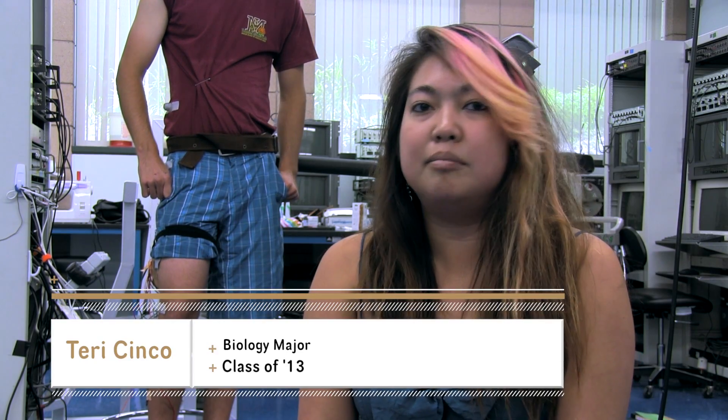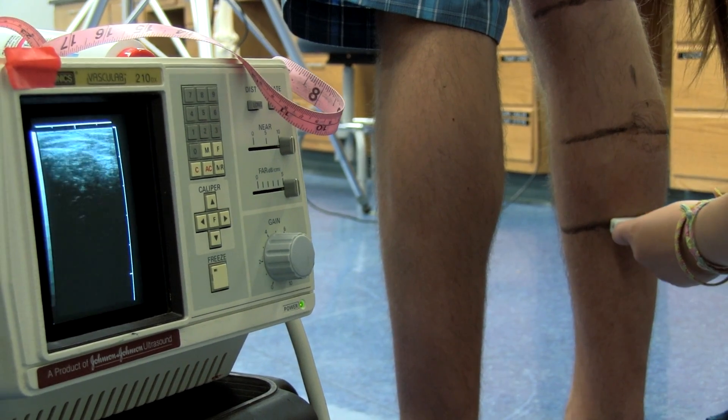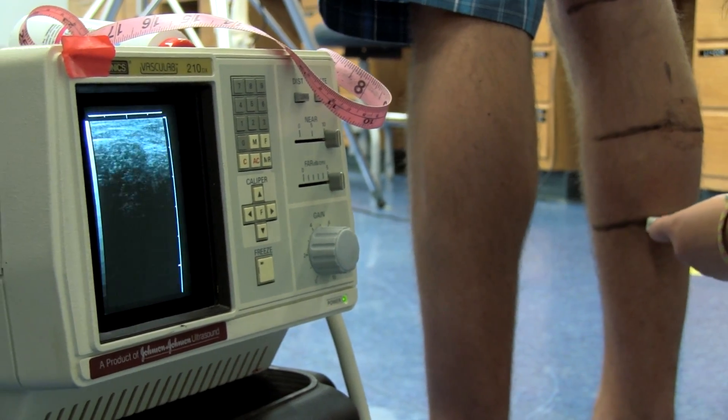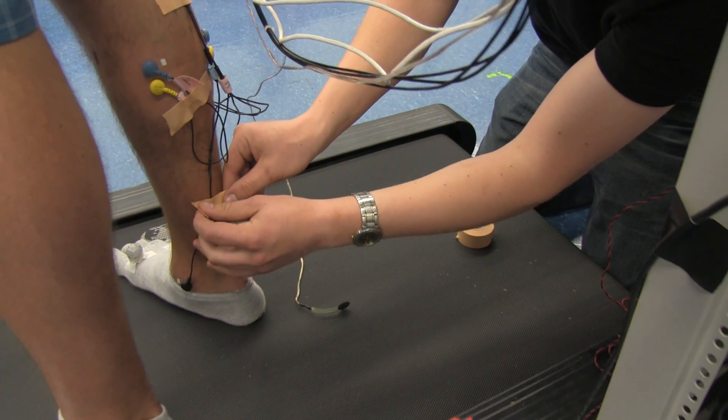So we use ultrasound to measure muscle thickness, muscle fiber angles, and where we need to put the electrodes for the EMGs. The EMGs themselves capture electrical activity in the muscles, so how your brain recruits the muscles.